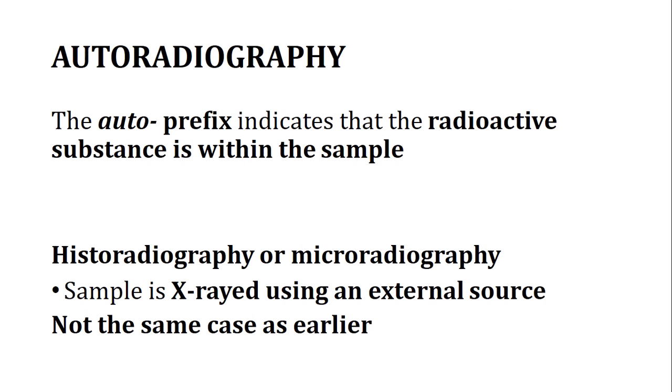We are moving to our next topic: autoradiography. The 'auto' prefix indicates that the radioactive substance is within the sample — the source of radiation is not external, it is coming from the sample itself. Other techniques called historadiography or microradiography use an external X-ray source, but in autoradiography the source is the sample itself.